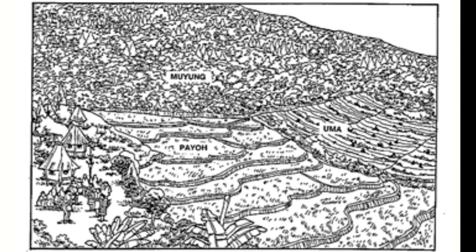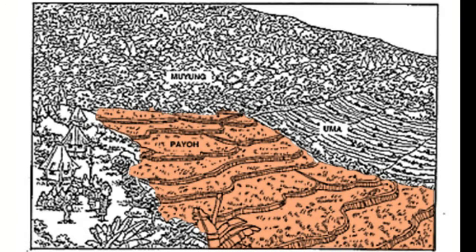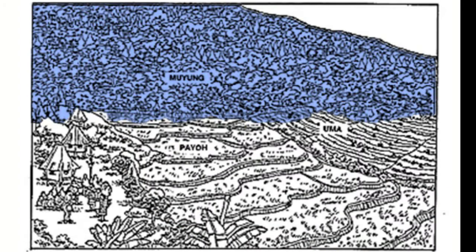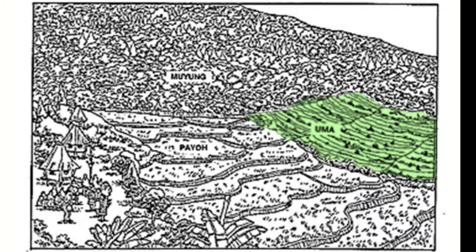The farming system of the Ifugos is composed of the payo, rice terraces, mweung, woodlot, and the umma, swidden.